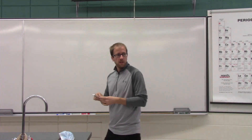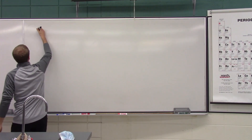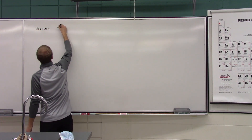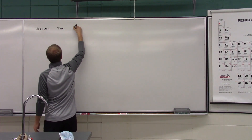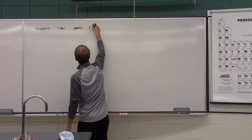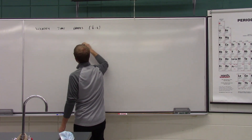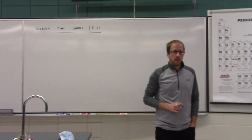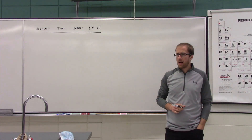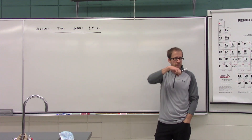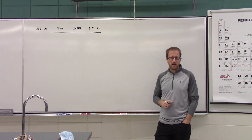Today we are going to be learning about velocity-time graphs — VT graphs. On a velocity-time graph, what do you think is the dependent variable? What do you think is the independent variable?